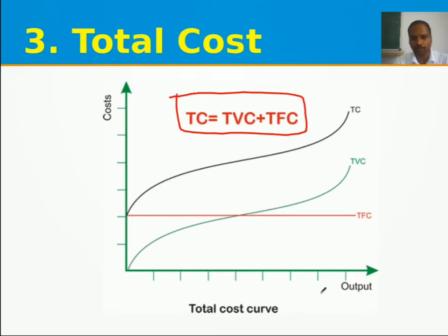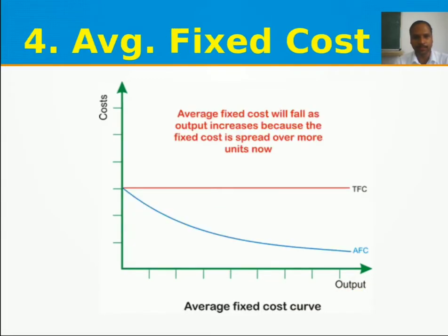Total cost is the addition of total variable cost and total fixed cost. When TFC and TVC are added together we get the total cost curve. These three curves — TFC, TVC, and TC — are drawn separately in one graph.